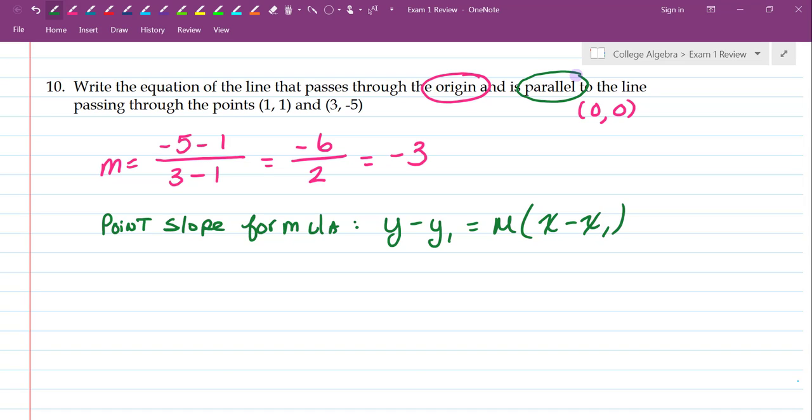So now I have a point. My point is 0, 0, the origin. I have my slope, negative 3, because it has to be parallel to the other one.